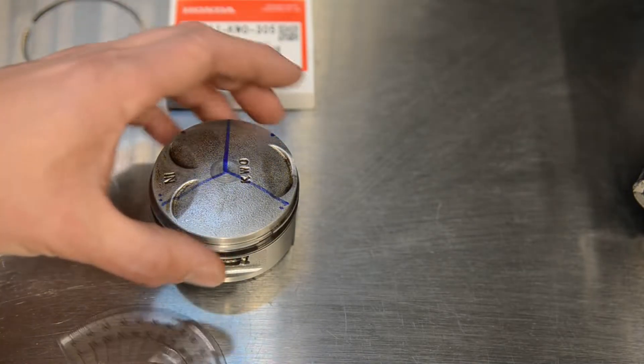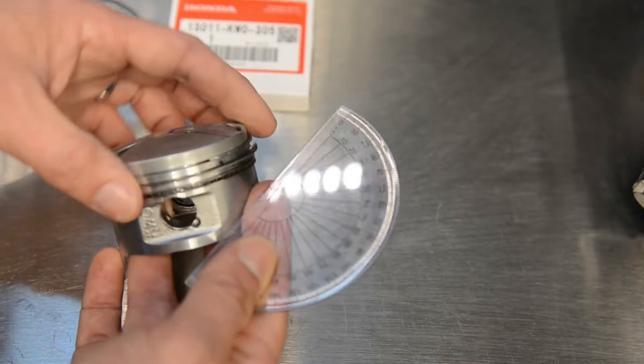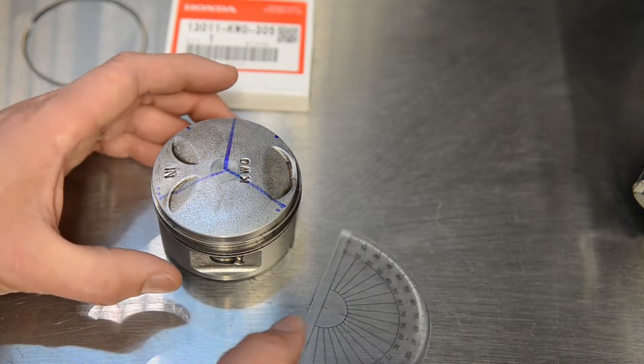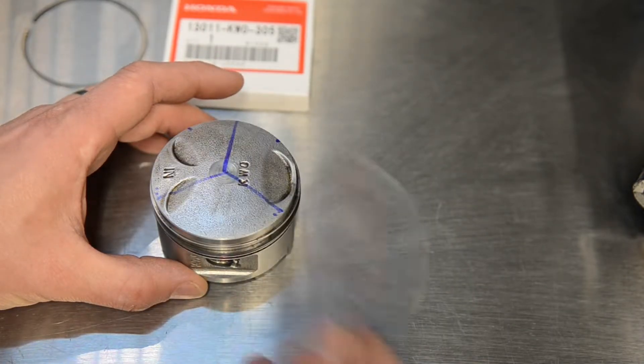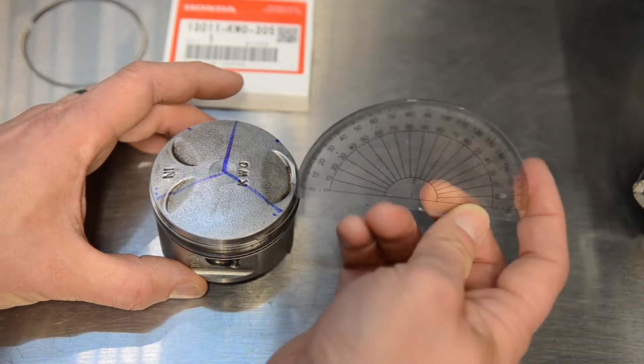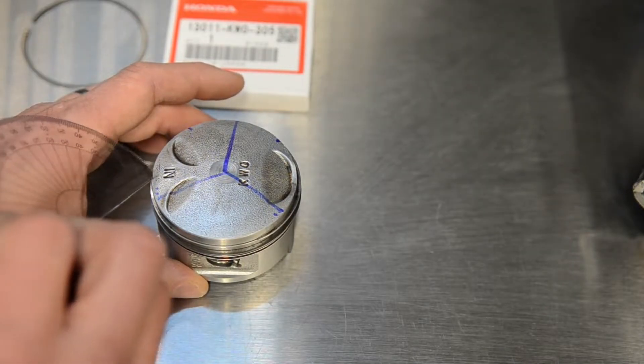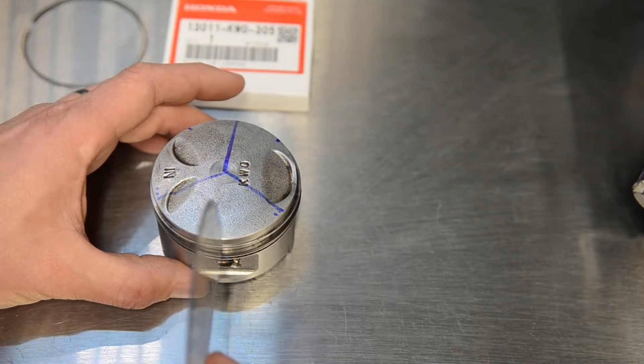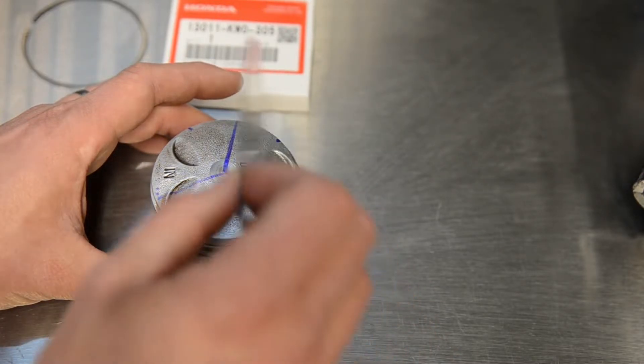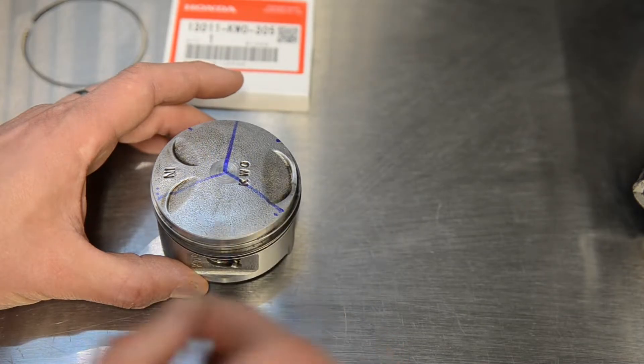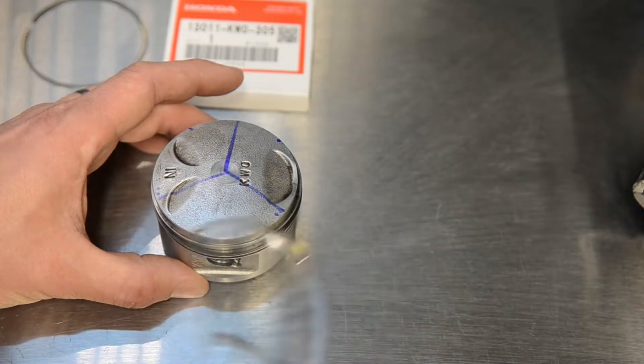These are the original rings that are on it. If you look at the exhaust side, you don't want the gap to be on the thrust side of the piston. You don't want the gap here, here, on this side of the pin or that side of the pin. That kind of leaves this area, this area, that area, and that area.